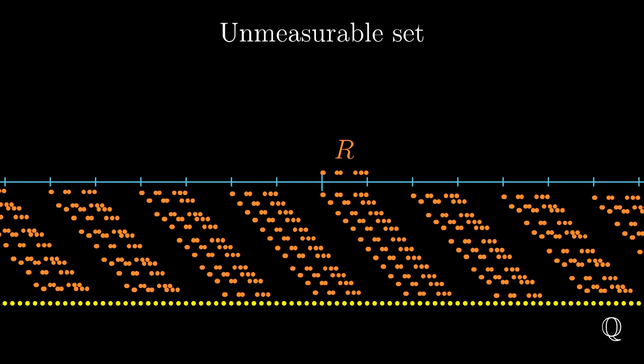Therefore, the set r provides a counterexample to the requirements for the measure we have set up before. Now let's make sure that we have covered all the real numbers. Whenever we take a real number x, this number is in one of the groups. This group has a representative in the set r.